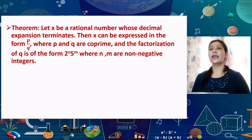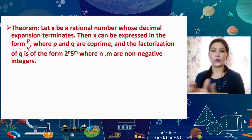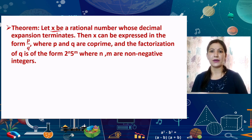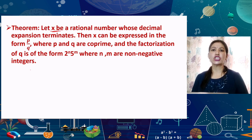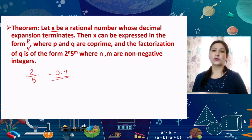Now we move to a very interesting theorem. If x is a rational number whose decimal expansion terminates — for example, 2/5 = 0.4 (remainder becomes 0) — then the denominator, when written in its lowest form p/q, must be of the form 2ⁿ × 5ᵐ where n and m are non-negative integers. If the remainder never becomes 0, such as 10/3, the decimal is non-terminating repeating.